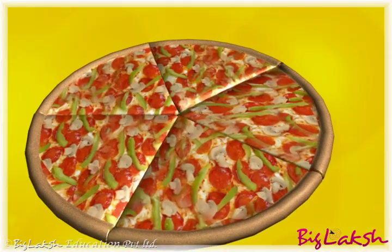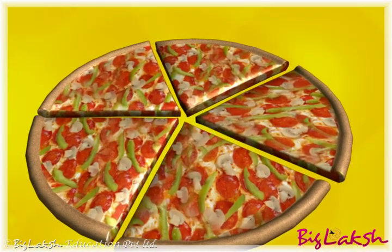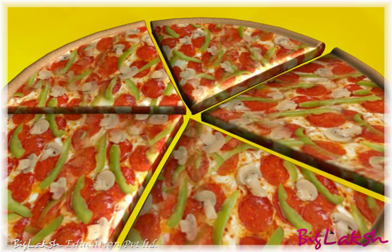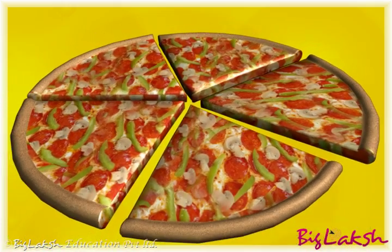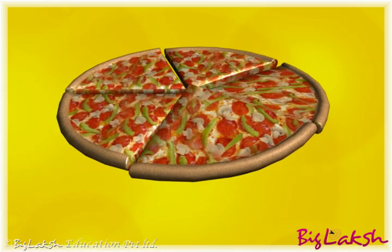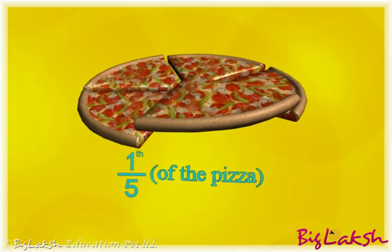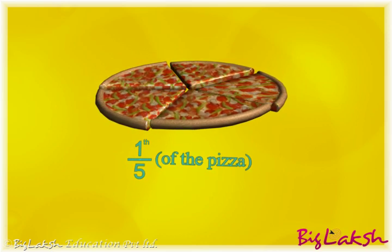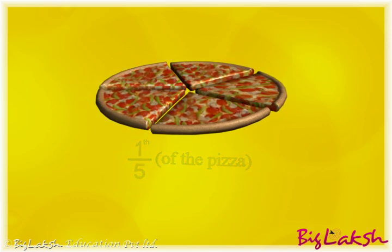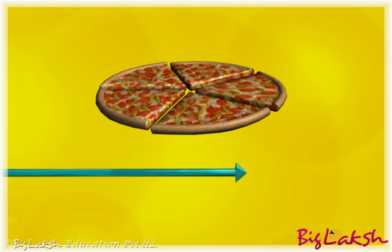Let us divide this pizza into five equal parts and see how we can represent this on a number line. As you can see, one piece of the pizza represents one-fifth of the entire pizza. Now let us see how to represent this on the number line.